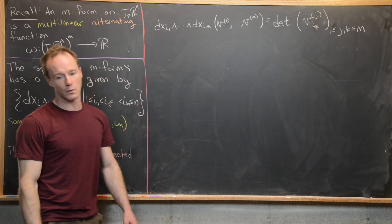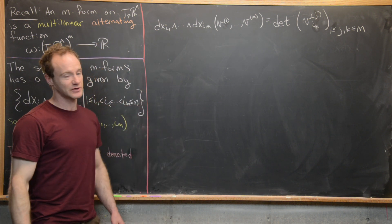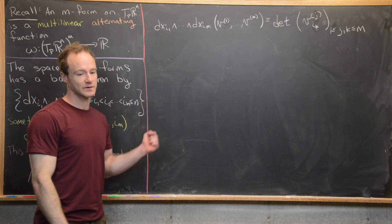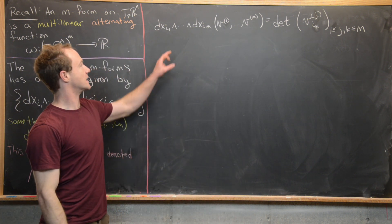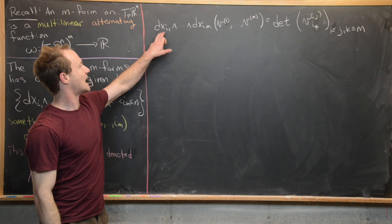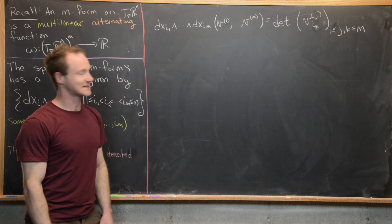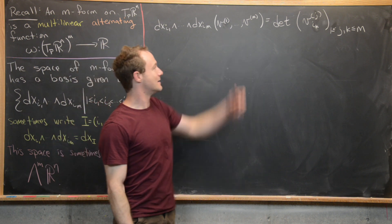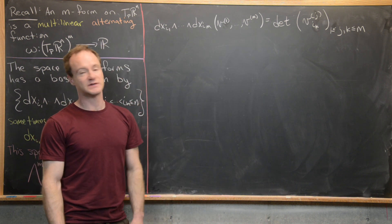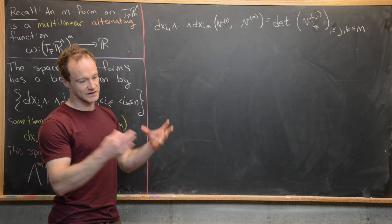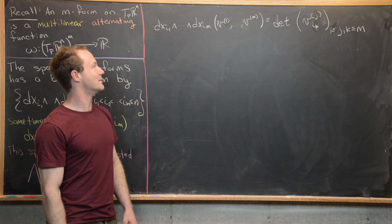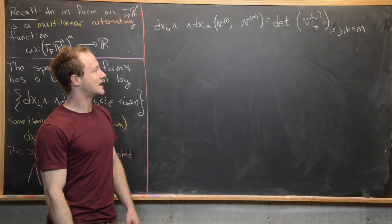And then also I want to recall how exactly this elementary 1 form is defined in terms of what it is as a function. So if you have this DXI1 wedge all the way up to DXIM, and you're putting these M different vectors from TPR^N inside, then what you get is the determinant of a certain M by M matrix.